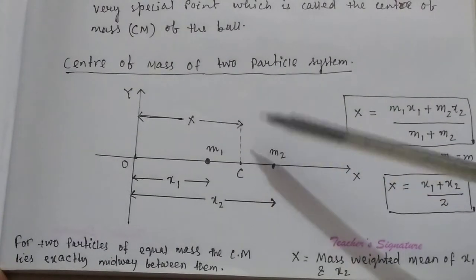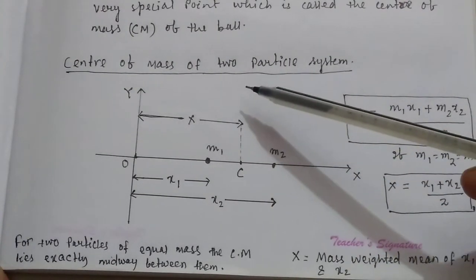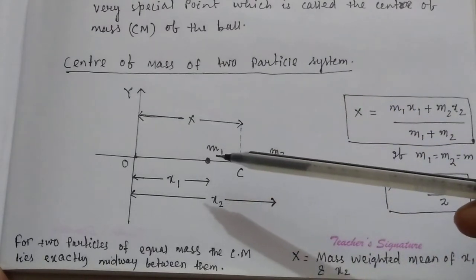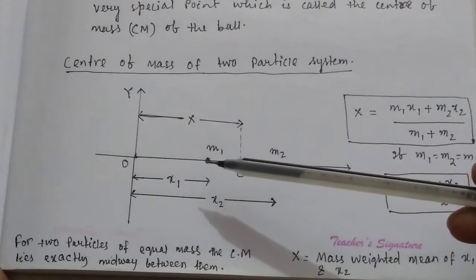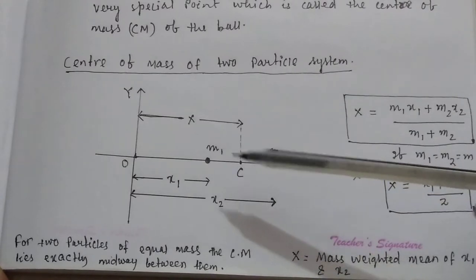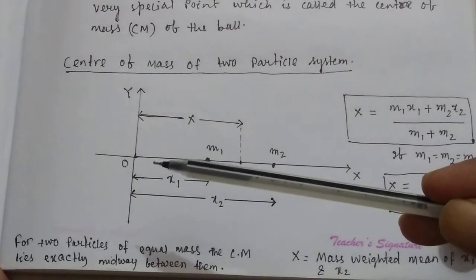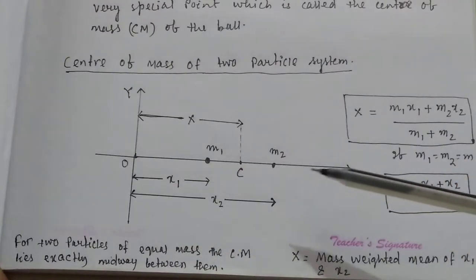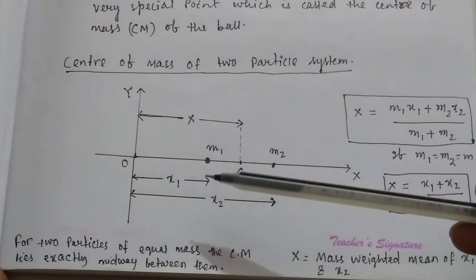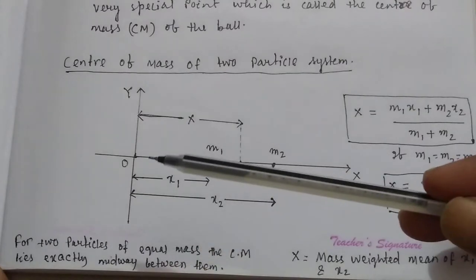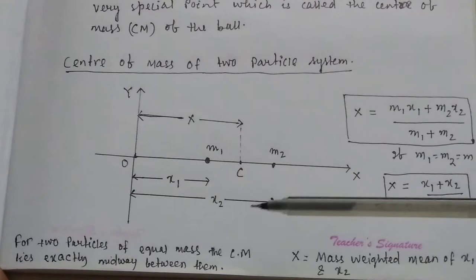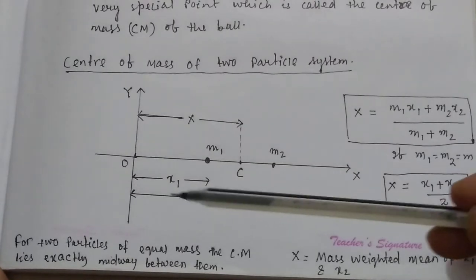Let us first discuss how to find out the center of mass of a two-particle system. One particle has mass M1, another particle has mass M2, and the two masses are placed on the x-axis. This is the x-axis of the coordinate system. The mass M1 is at a distance x1 from the center O, and the mass M2 is at a distance x2 from the center O.